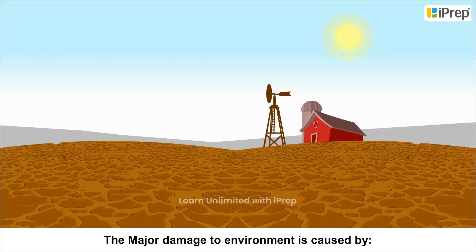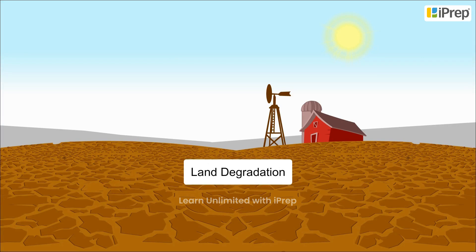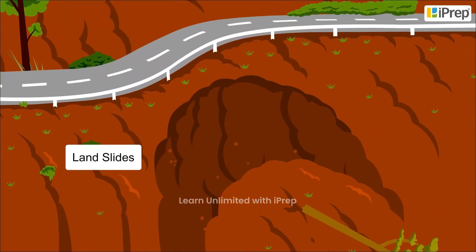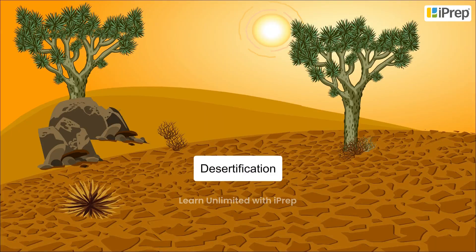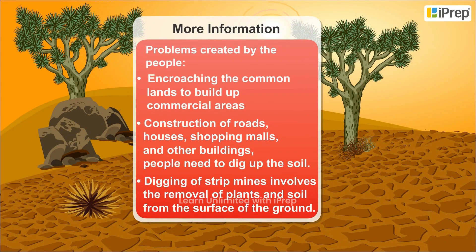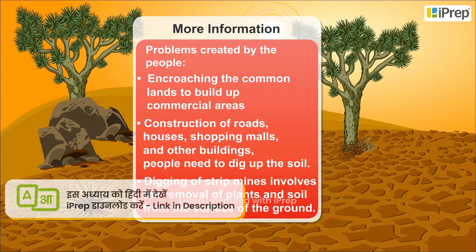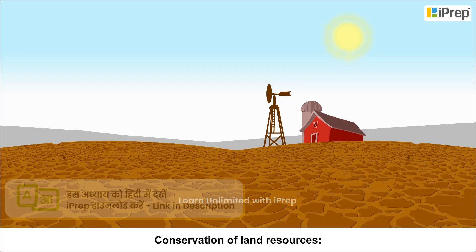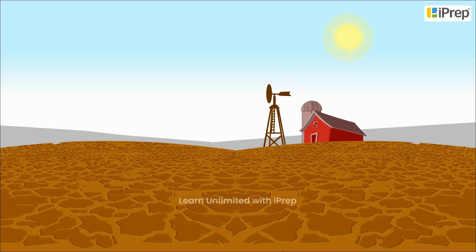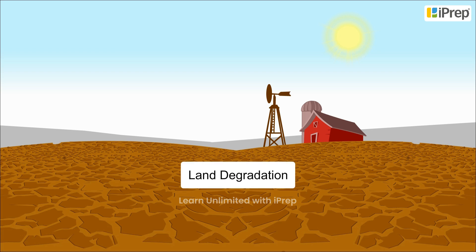The major damage to the environment is caused by land degradation, landslides, soil erosion, and desertification.